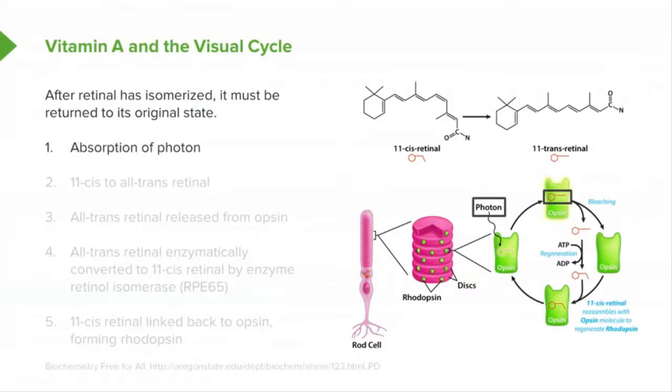So, first we have the absorption of a photon that causes the 11-cis to move out to the all-trans form, and that all-trans form of retinal now is converted back into the 11-cis form in this visual cycle. The all-trans retinal, first of all, is released after it has been converted into the all-trans form.